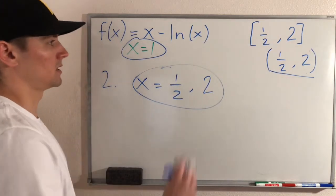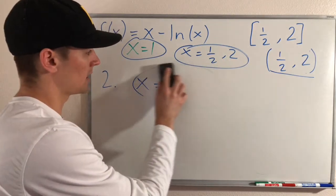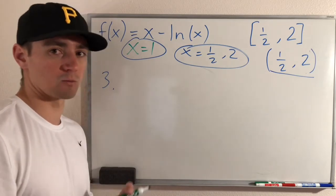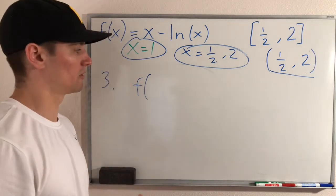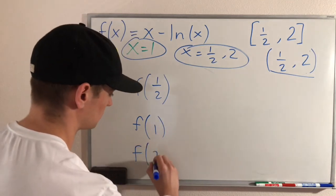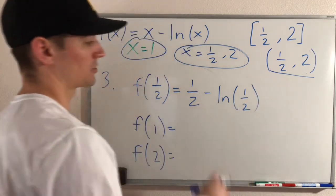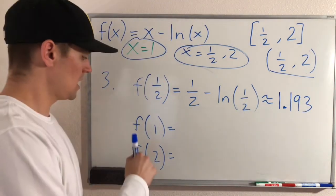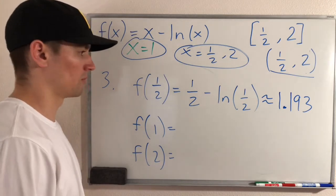The third step is to take all three of those critical values — one half, one, and two — and plug them into our original function to figure out which gives the highest and which gives the lowest value. We go back to the original function f and don't need the derivative anymore. Plugging in one half gives us one half minus ln of one half, which is an irrational number — about 1.193. Unfortunately the only way to do this is by plugging it into a calculator.